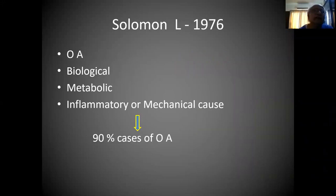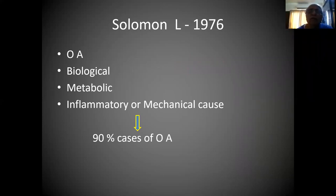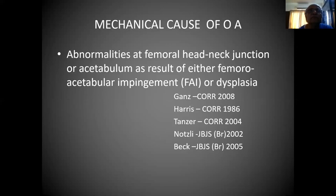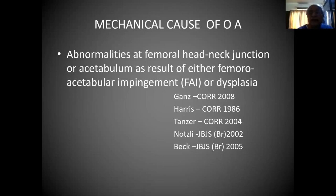Solomon, in 1976, said that osteoarthritis is caused by biological, metabolic, inflammatory, or mechanical causes — 90% of cases at that time. The mechanical cause of OA involves abnormalities at the femoral head-neck junction or acetabulum, as a result of either femoroacetabular impingement or dysplasia. These are the two main causes leading to osteoarthritis.